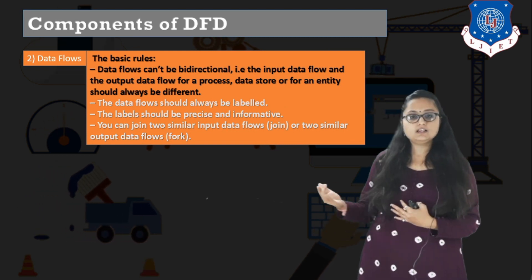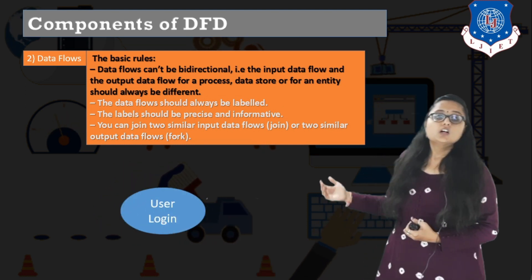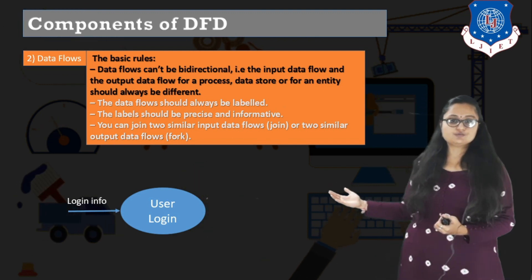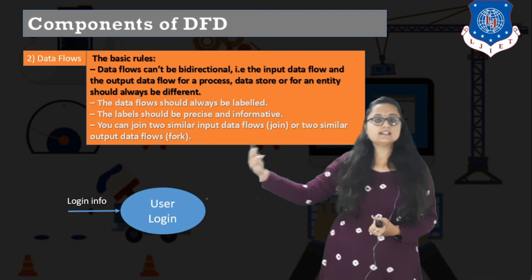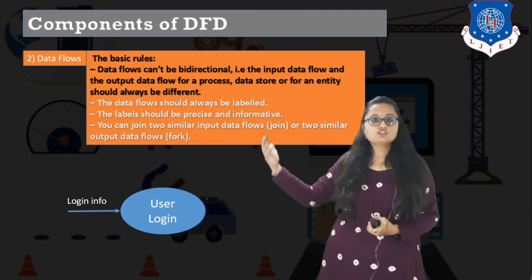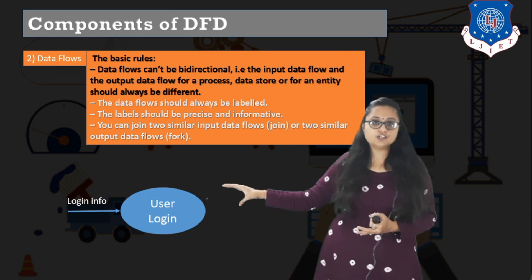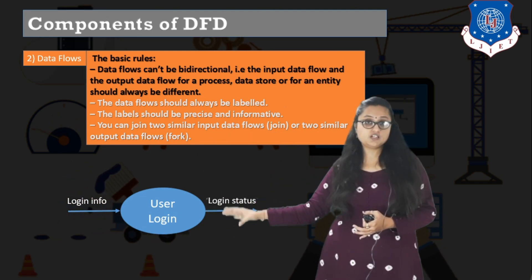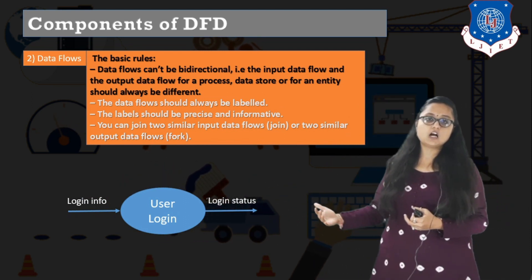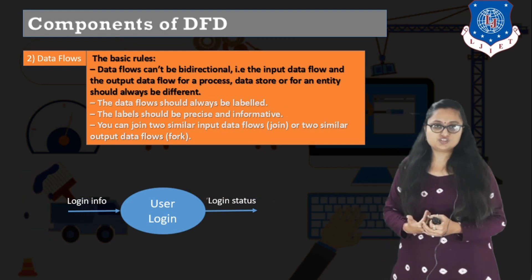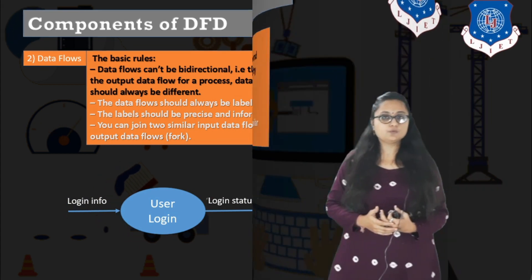You can have joins and forks in data flow. For example, there is a process called 'user login' with an arrow coming towards it — that means login info (username and password) is the information being entered into this process. The user login process manipulates that information and gives an output. So there is an input data flow and an output data flow.